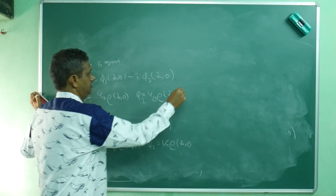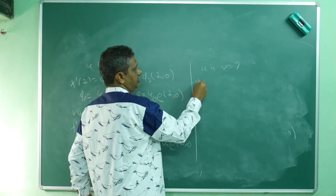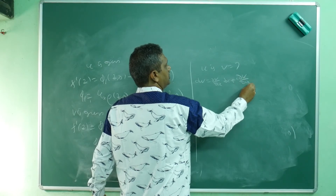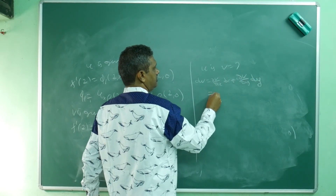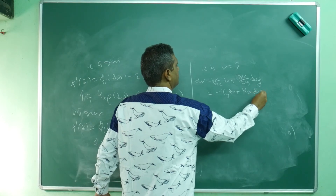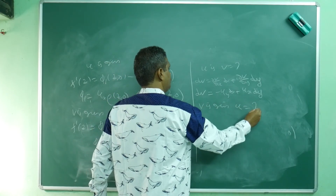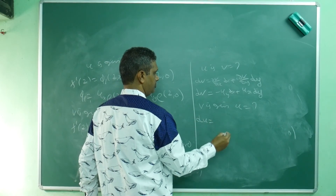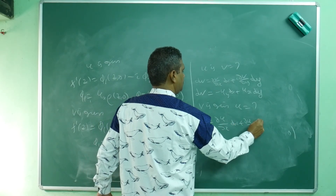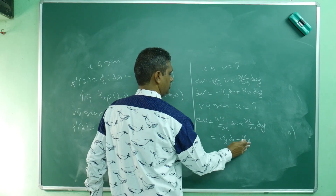Suppose u is given and v is to be found: start with dv = (∂v/∂x)dx + (∂v/∂y)dy, write v_x = -u_y and v_y = u_x, then integrate both sides. Suppose v is given to find u: write du = (∂u/∂x)dx + (∂u/∂y)dy, with u_x = v_y and u_y = -v_x, then integrate.